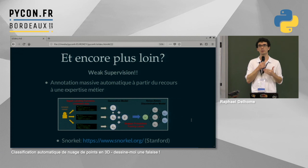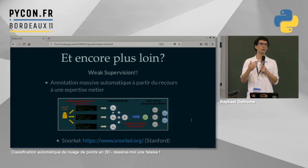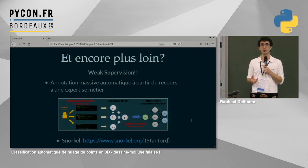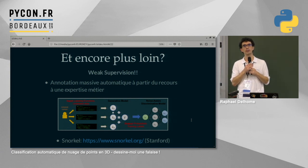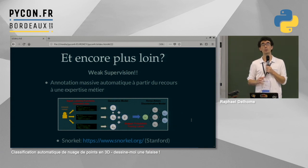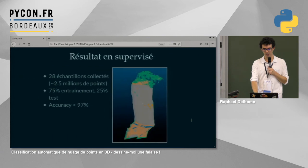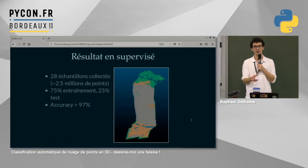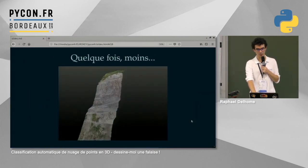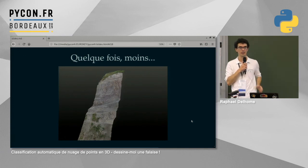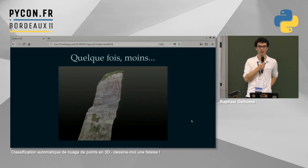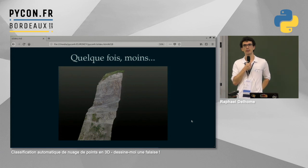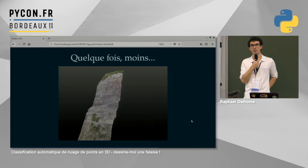Concernant la représentativité du jeu d'entraînement : on avait une dizaine de jeux de données entre 600 000 et 32 millions de points, dont on a extrait 2,5 millions de points sur une trentaine d'échantillons, avec 5 échantillons de falaises pour diversifier la description de ce qu'est une falaise. On n'est peut-être pas allé assez loin. Sur les jeux de données faciles ça marche bien, mais la grosse question reste la représentativité des données en entrée.